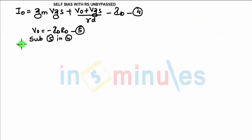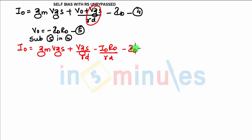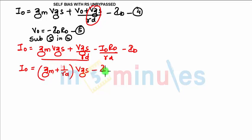After substitution, io equals gm·vgs plus vgs divided by rd — separating terms — plus vo expressed as minus id times Rd divided by small rd, minus id. Taking vgs common from the first two terms gives io equals (gm plus 1 divided by rd) times vgs minus id times Rd divided by small rd minus id. This is equation six.